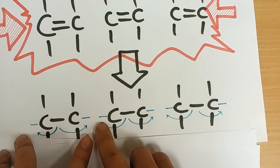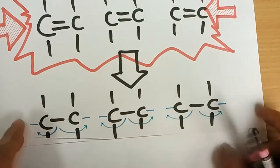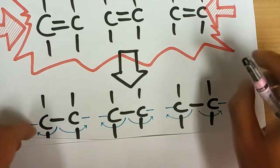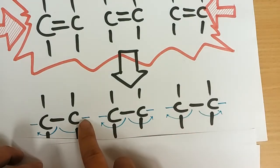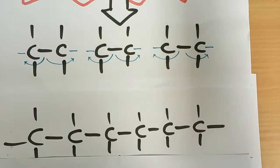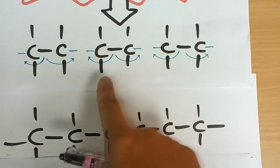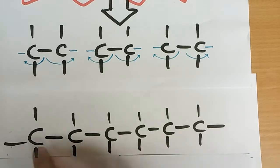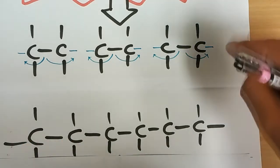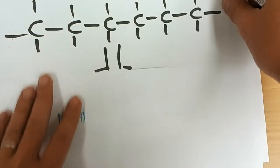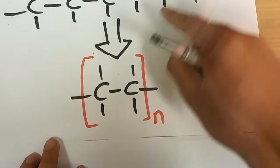So initially you have two bonds, one of them breaks — each side becomes a half bond. Now with heat, pressure, and catalyst, if the conditions are correct, the half bond here and the half bond here will join. What you get is many molecules joining together to form a single neutral molecule, and this neutral molecule is known as a polymer.